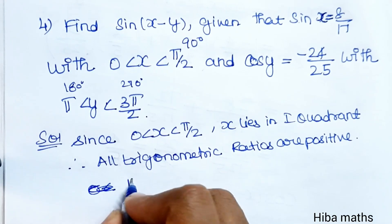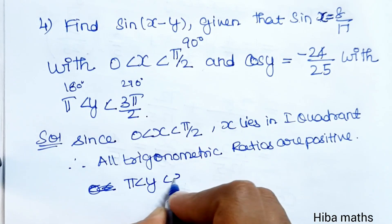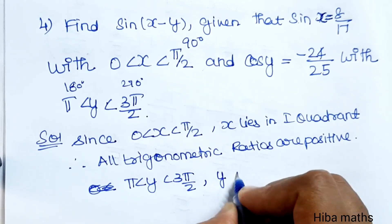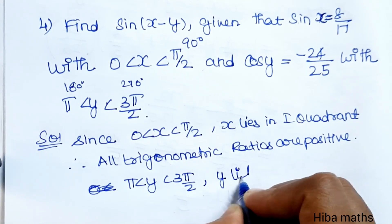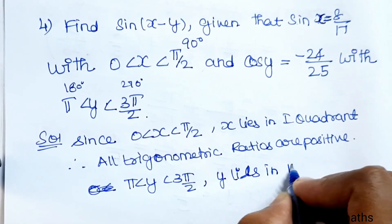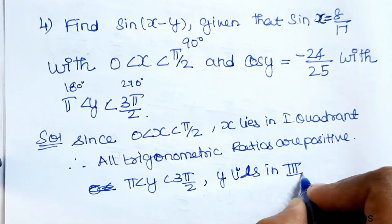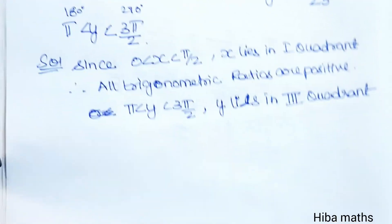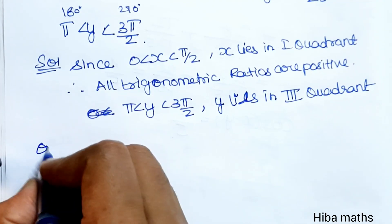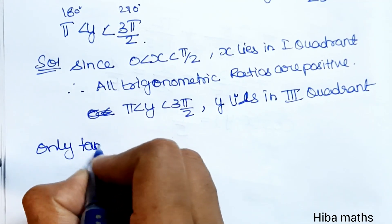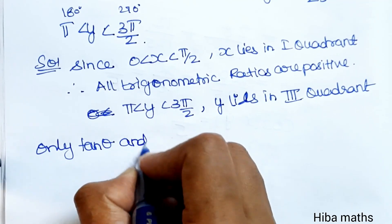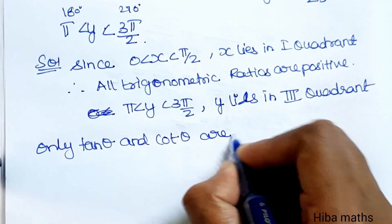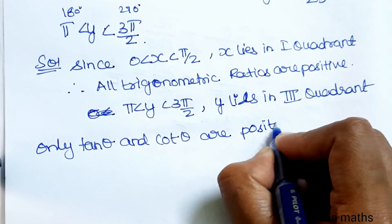Since y is greater than pi and less than 3 pi by 2, y lies in the third quadrant. In the third quadrant, only tan theta and cot theta are positive.